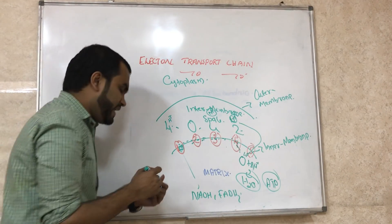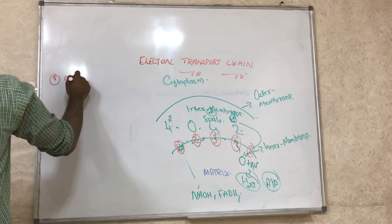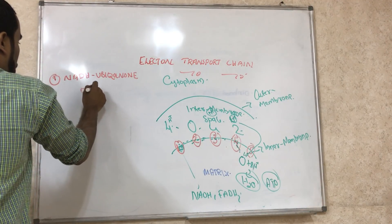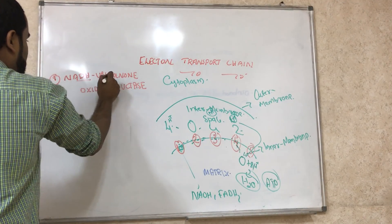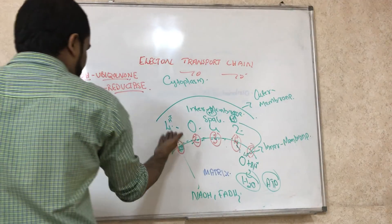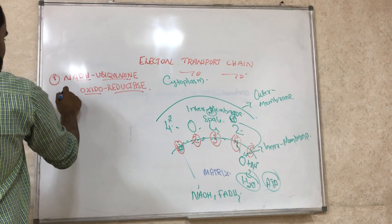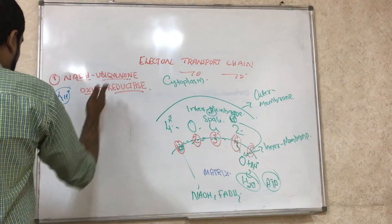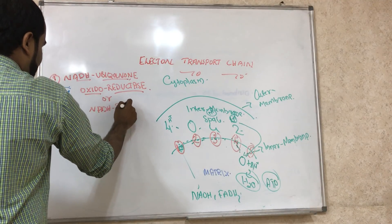The first complex is called NADH ubiquinone oxidoreductase. Its other name is NADH dehydrogenase. This complex pumps 4 H+ out.